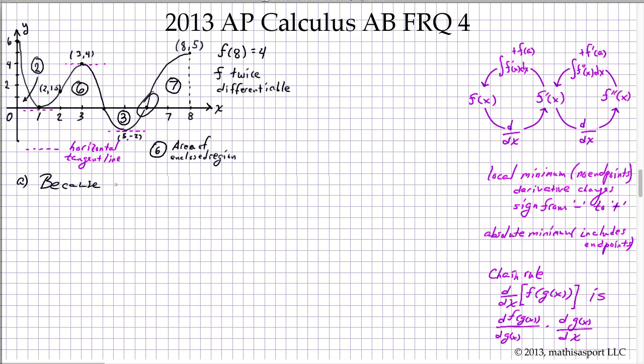Because f prime is represented in the graph, we look for places where it changes from negative to positive height, and that occurs only at x equals 6.